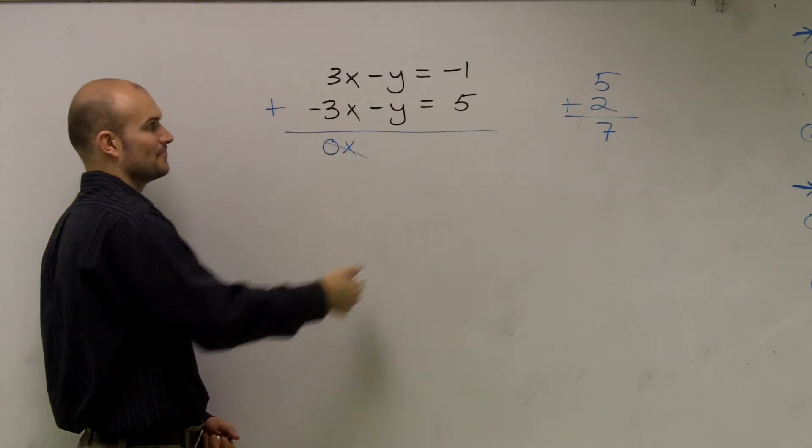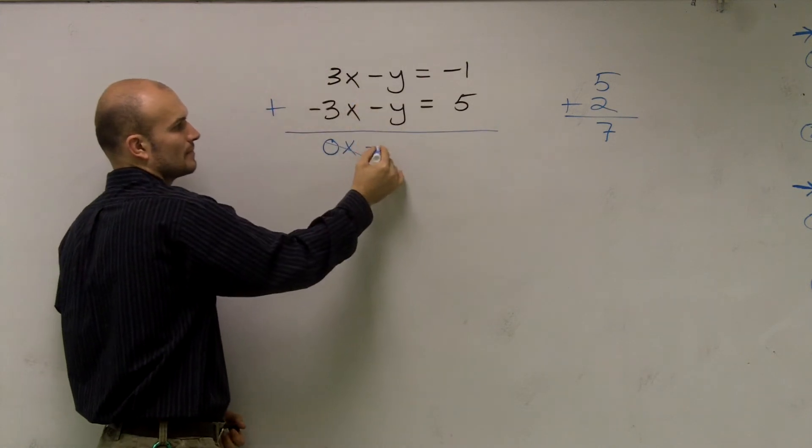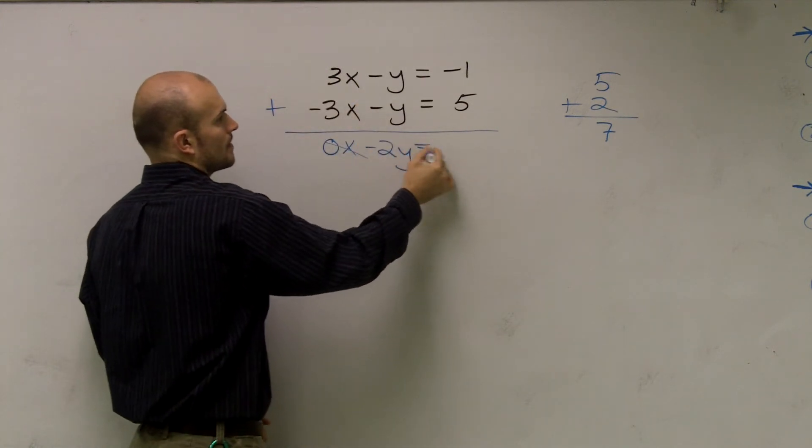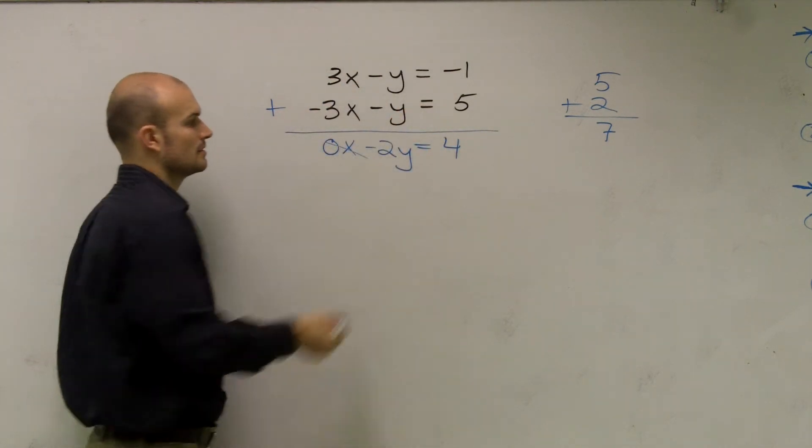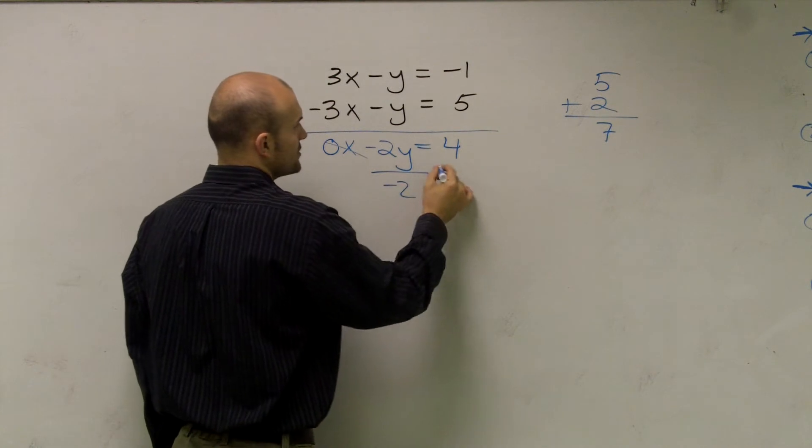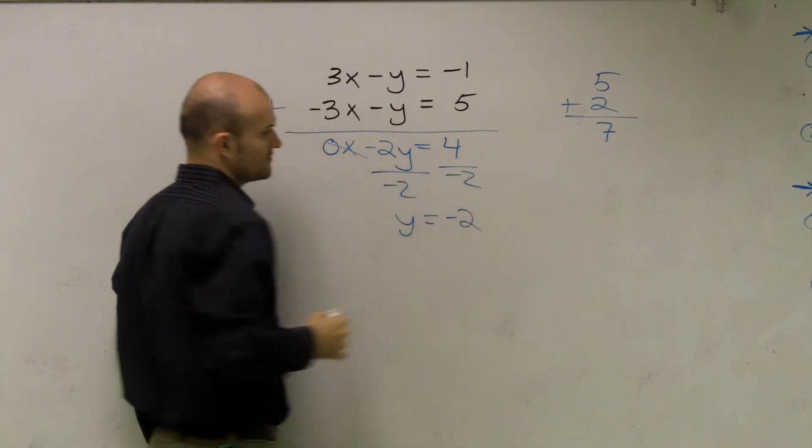Add to the elimination. Negative y plus negative y. Negative 1 plus 5 is a positive 4. Now, I divide by negative 2. y equals negative 2.